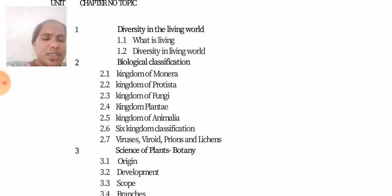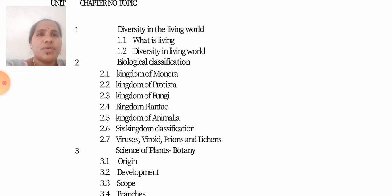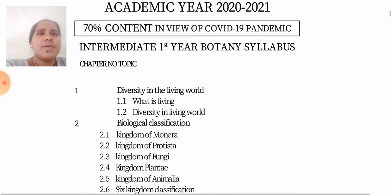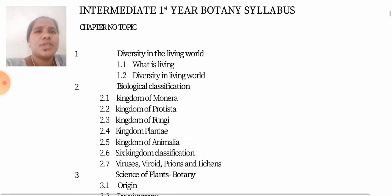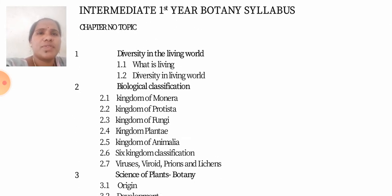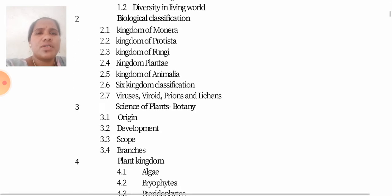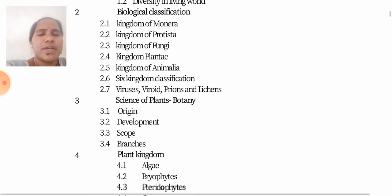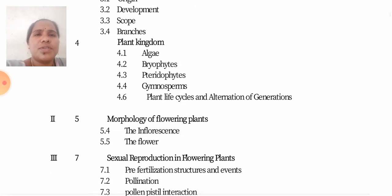So, Diversity in the Living World covers the first unit content. Next, the second unit is the Morphology of Flowering Plants.